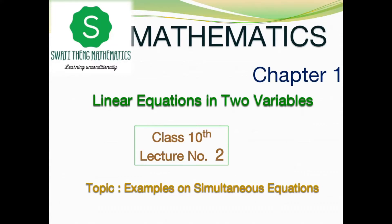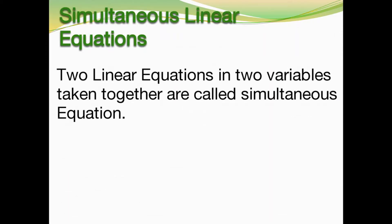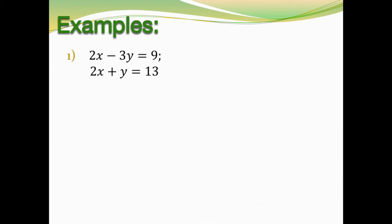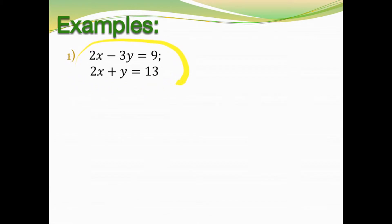Hello everyone, welcome to this lecture on linear equations in two variables. Today we are going to discuss examples on simultaneous linear equations. In the last lecture we already discussed what simultaneous linear equations are and two methods to solve them. Here, example number one is: 2x minus 3y equals 9, and the second equation is 2x plus y equals 13. Both are linear equations containing two variables, and this pair is called simultaneous linear equations.